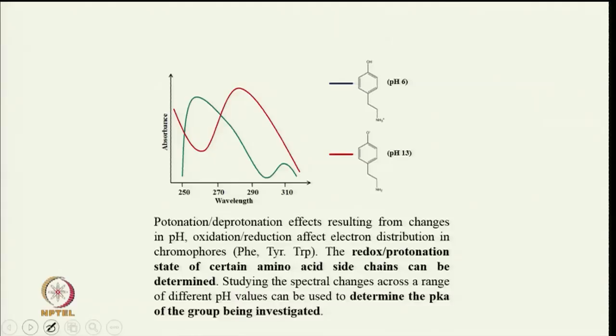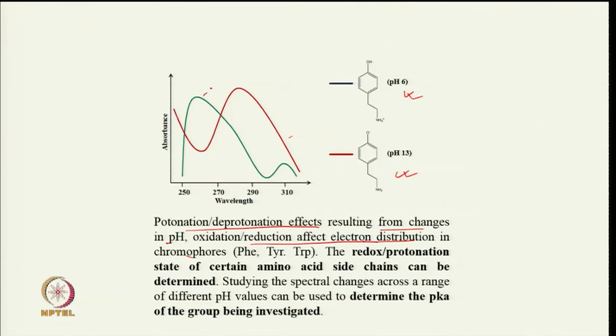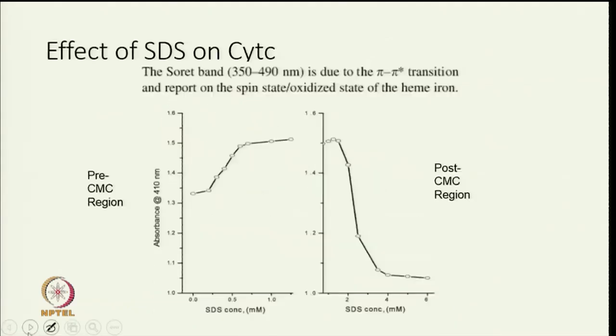I am not detailing this here, but a dedicated lecture will cover how to get thermodynamic and kinetic parameters using a spectroscopic signal. Protonation/deprotonation resulting from pH changes affects electron distribution in the chromophore. For example, a compound at pH 6 and pH 13 shows different spectra, which can be used to get the pKa value.